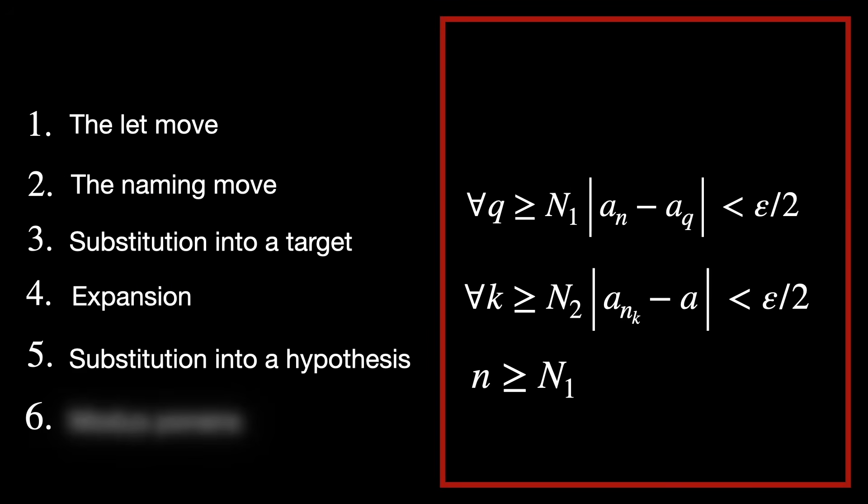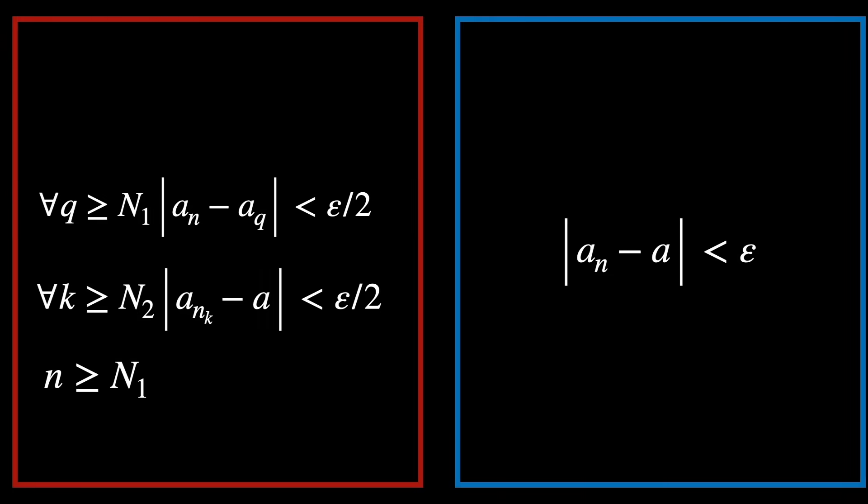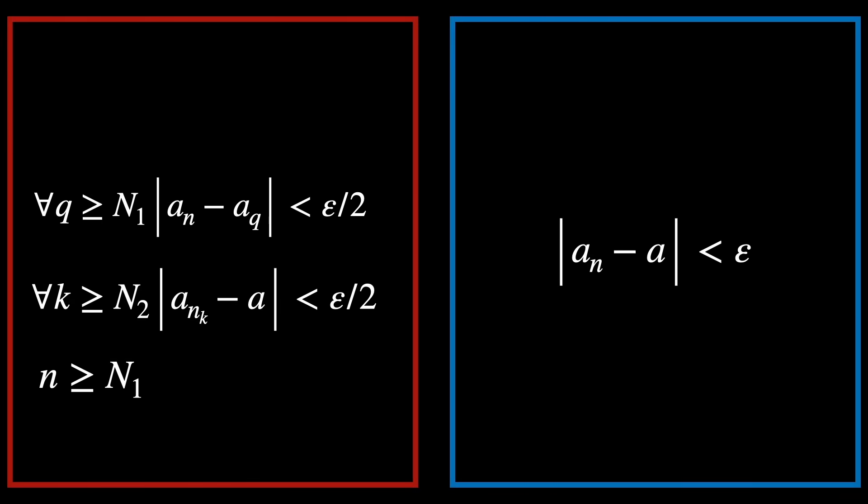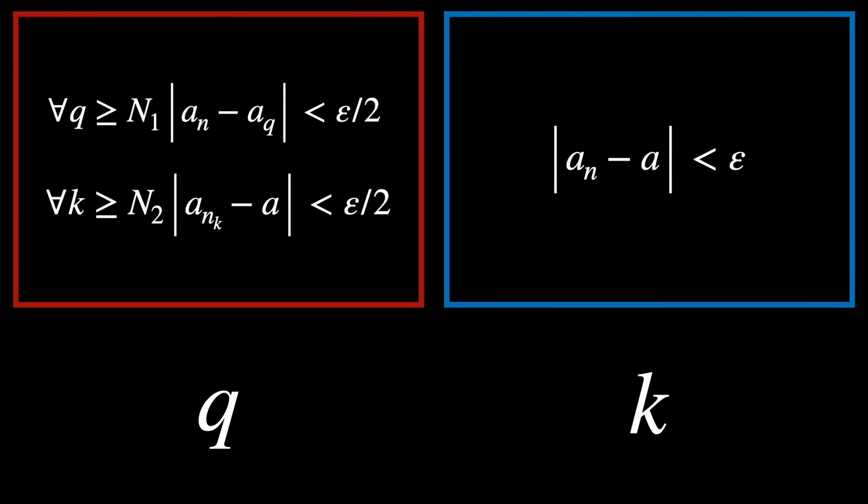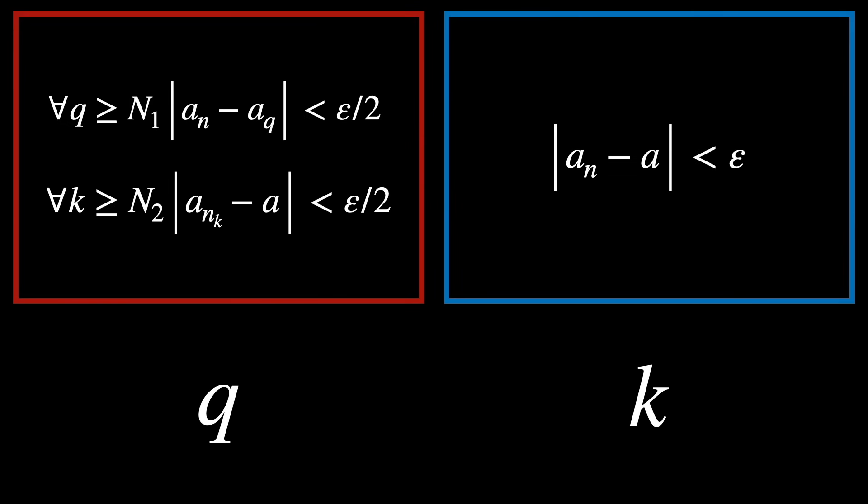This is called the modus ponens move. We've already used the assumption little n greater than or equal to N1, so we don't need to keep it listed anymore. Anyway, we need to pick specific values for the indices q and k that satisfy these conditions. And this is so that a sub n is close to a sub n sub k and a sub n sub k is close to a.